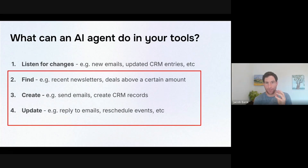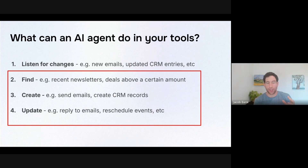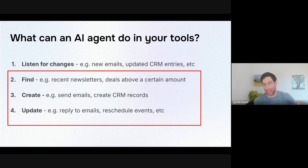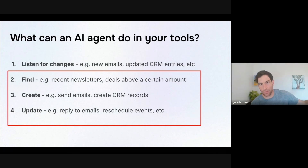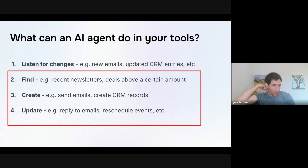I wanted to break this down into four categories, or four ways that an AI agent can interact with your tools. The first one we covered last time, which is listening for changes in your tools — like a new email has come in, a record has been updated in our CRM, a form has been filled out. What I want to talk about today are the three other major capabilities that we're going to give our AI agents by integrating them deeply into our existing tools.